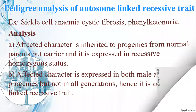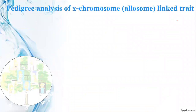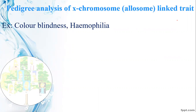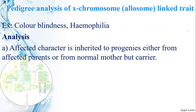Next one: sex-linked trait pedigree analysis. This covers sex-linked or autosomal traits, both recessive and dominant. For color blindness and hemophilia, the affected character is inherited by progenies either from affected parents or from the normal mother. The affected parents carry the trait on the X chromosome.